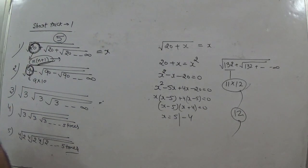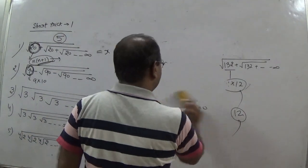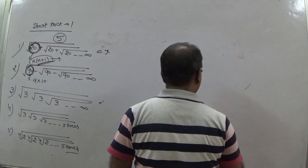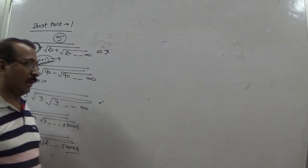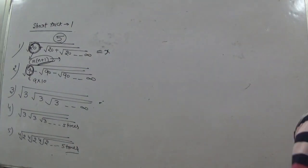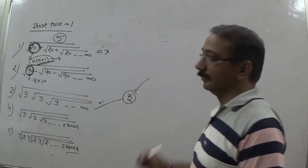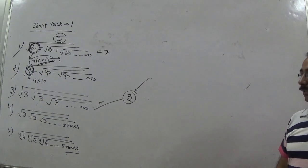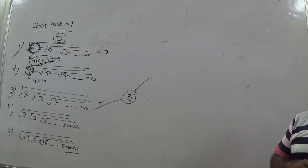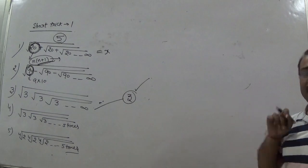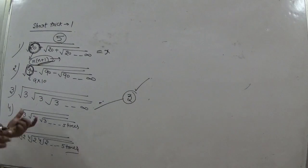Now for the third type: terms inside the root are being multiplied up to infinity — for example, root 3 × root 3 × root 3 up to infinity. If this multiplication continues infinitely, the answer is simply the number itself: 3.